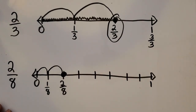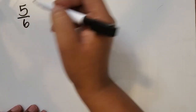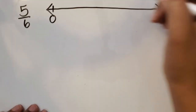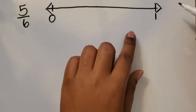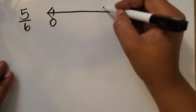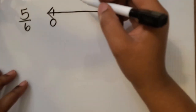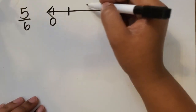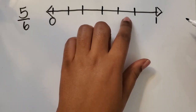If I wanted to represent five-sixths, I would draw my number line to represent a whole. Looking at my fraction, I see that six is the denominator, so I know I need to partition the whole into six equal parts. I'm going to start by partitioning it in half first because it's an even number. Then for each half, I need three spaces on each side, so I'll partition each half into thirds for a total of six equal parts.